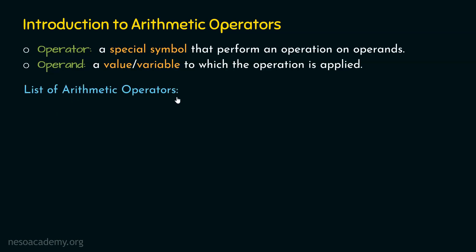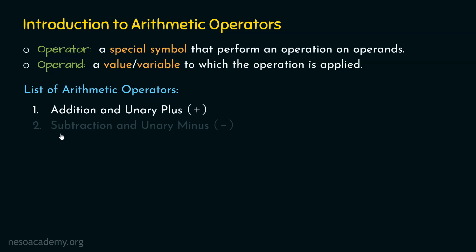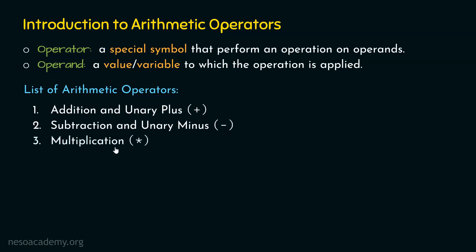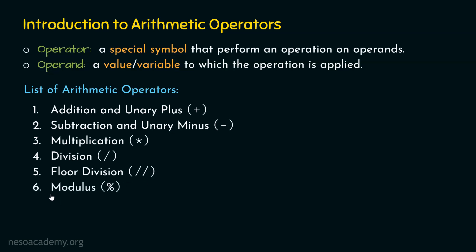The list of arithmetic operators is as follows. The first is addition and unary plus, denoted by the plus sign. The second is subtraction and unary minus, denoted by the minus sign. The third is multiplication, denoted by star. The fourth is division, denoted by forward slash. The fifth is floor division, denoted by two forward slashes. The sixth is modulus, denoted by the percentage sign. The seventh is the power operator, denoted by two stars.